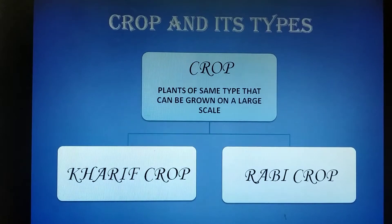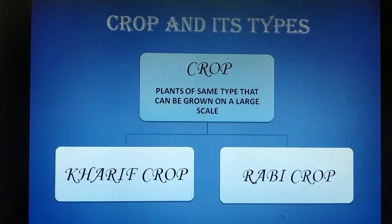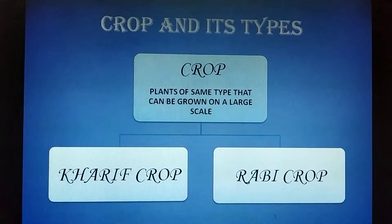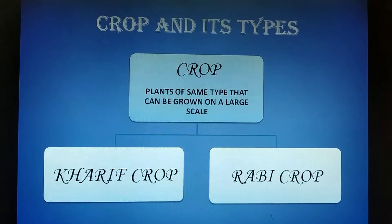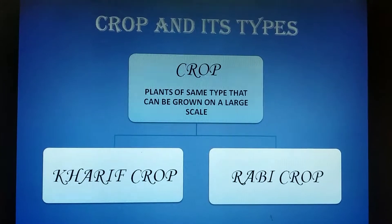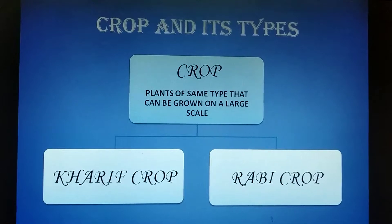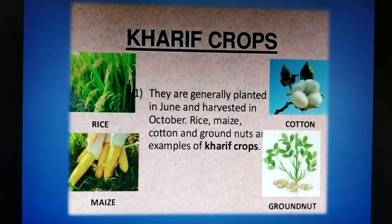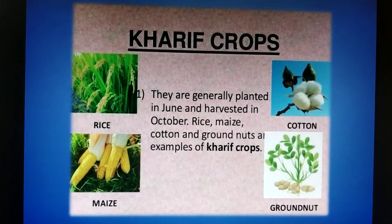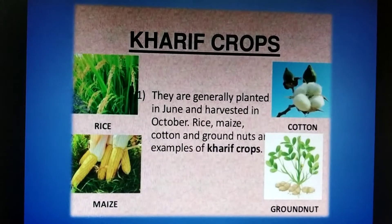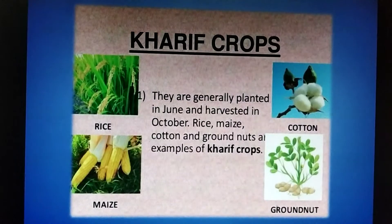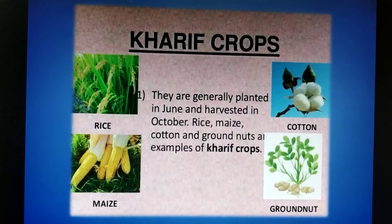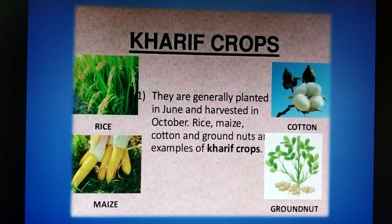India is a vast country and climatic conditions differ from region to region. Accordingly, we have two broad cropping patterns: Kharif crops and Rabi crops. Kharif crops are grown in the rainy season, which in India is generally from June to September. Paddy and soya bean are examples of Kharif crops, because they need lots of water to grow.